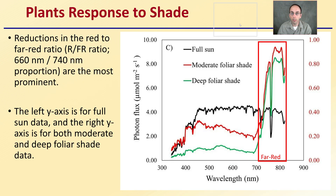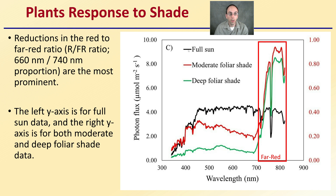Looking at the plant's response to shade: reductions in the red to Far Red ratio — the RFR ratio — at 660 nanometers to 740 nanometers proportion are the most predominant. On the left we have the y-axis for full sun data, and on the right we have the y-axis for both moderate and deep foliar shade data. In moderate to deep shade, we're seeing a definite increase in the photon flux, which goes back to Far Red's ability to penetrate deeper into the leaf surface.